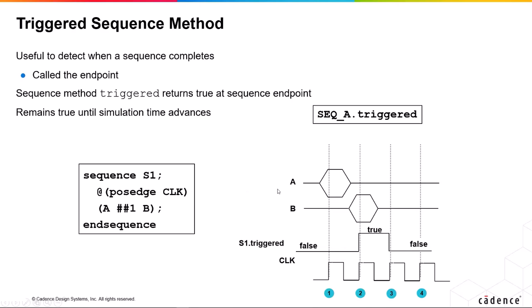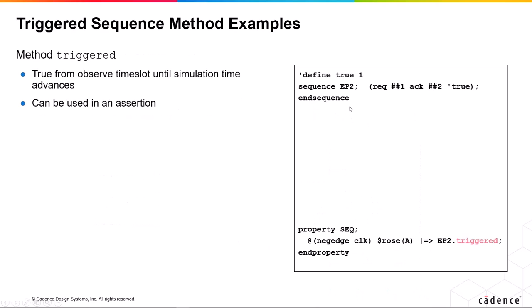Here we have sequence S1, which is A followed by B. S1.triggered will be true in any cycle where that sequence is just completed. It will be true until the next time we evaluate that sequence, which will be the next posedge clock. So if we have A and B high all the time, then that means sequence.triggered will be true for every cycle, and we can use that in a variety of places.